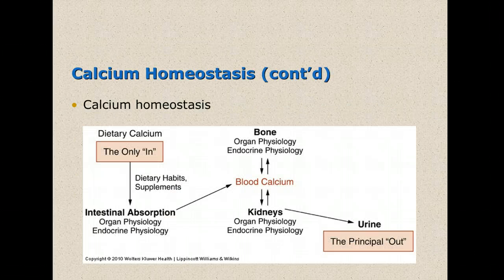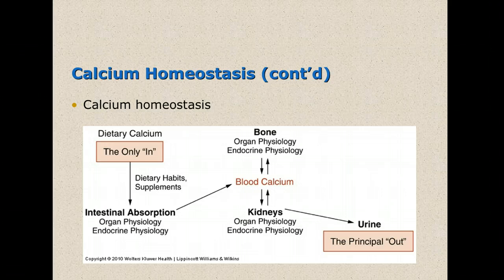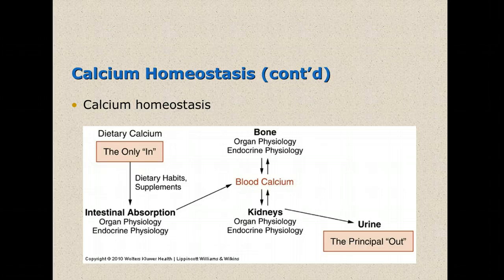For example, you may eat something with calcium in it. Things that are high in calcium include milk, spinach, kale, broccoli, and almonds. Calcium is absorbed in the intestines and goes to the blood. When it's in the blood, it is in constant flux of being stored in the bone, and it can also be mobilized from the bone back into the blood if calcium is needed for another function within the body.